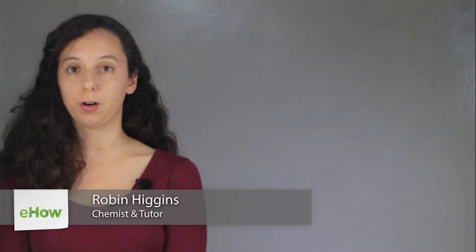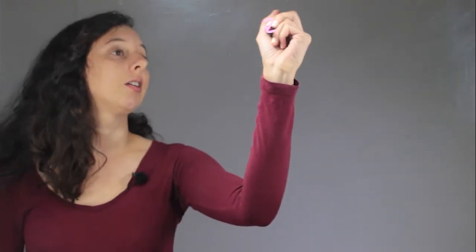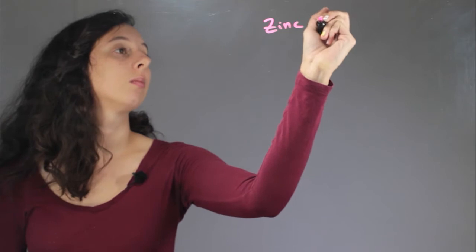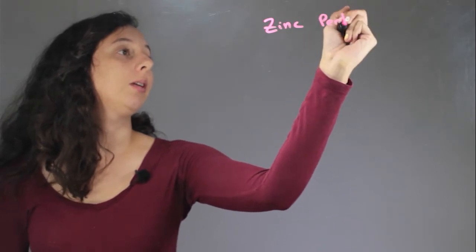Hi, I'm Robin Higgins, and this is what is the chemistry formula for zinc perbromate? Okay, so let's break down our two things that we have. The name is zinc perbromate.